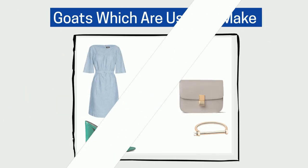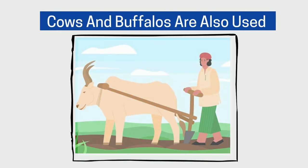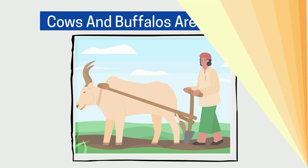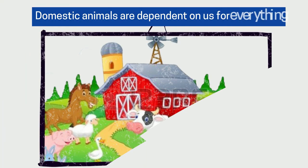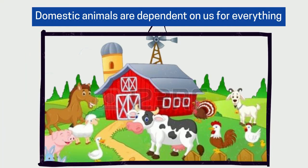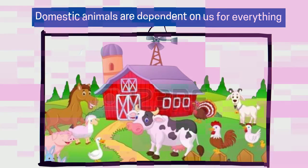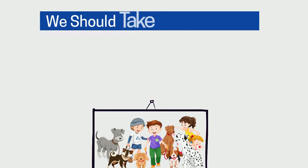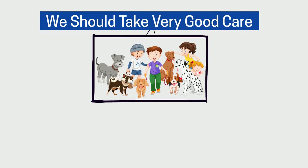We get wool from sheep and leather from cows and goats, which are used to make clothes, bags, and shoes. Cows and buffaloes are also used by farmers to plow the farmland.